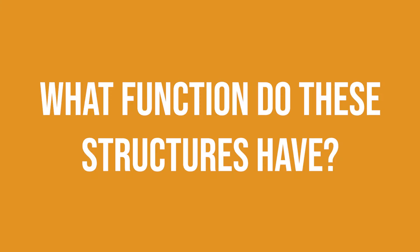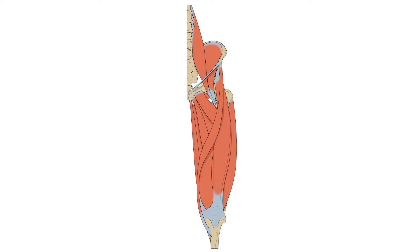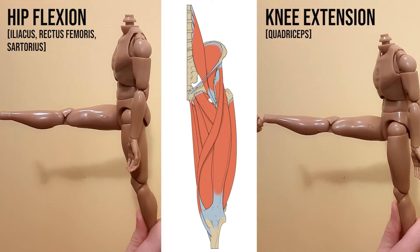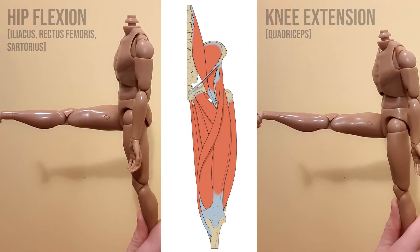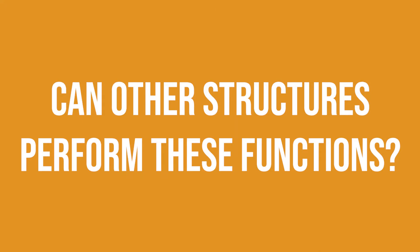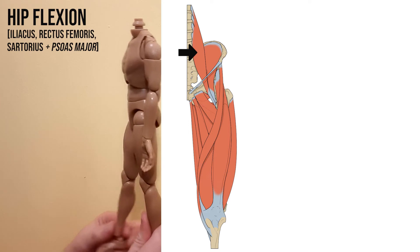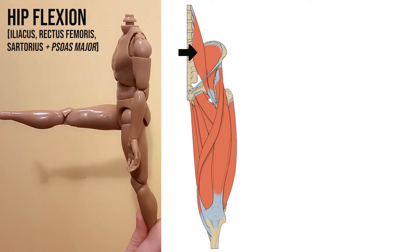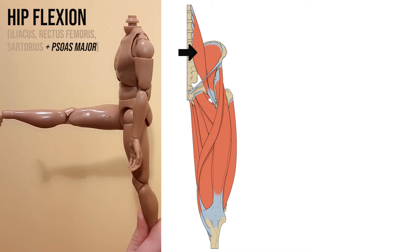Next, what function do these structures have? As a group, the muscles in the anterior thigh will flex the hip and extend the knee. If the nerve is severed, these movements will be compromised and potentially lost unless there are other muscles that can produce these movements. Psoas major is also a flexor of the hip and since it isn't innervated by the femoral nerve, it should be unaffected. This means that flexion may be weakened but shouldn't be lost.